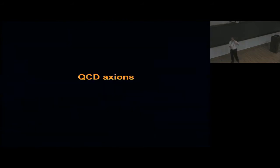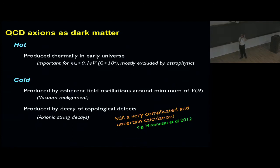Let me go through some of the candidates for dark matter. I'm going to start with the QCD axions, which are based and inspired by the strong CP problem. The QCD axions as dark matter arise in two ways, either hot, produced thermally in the early universe—these are mostly excluded by astrophysics—or cold, produced in one of two ways or both, by coherent field oscillations around the minimum of the potential.